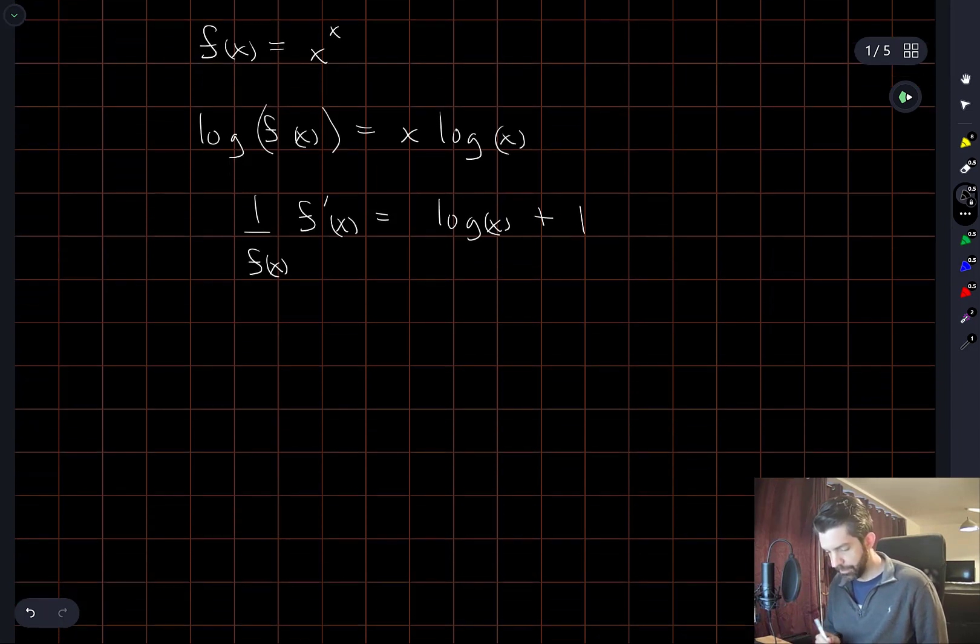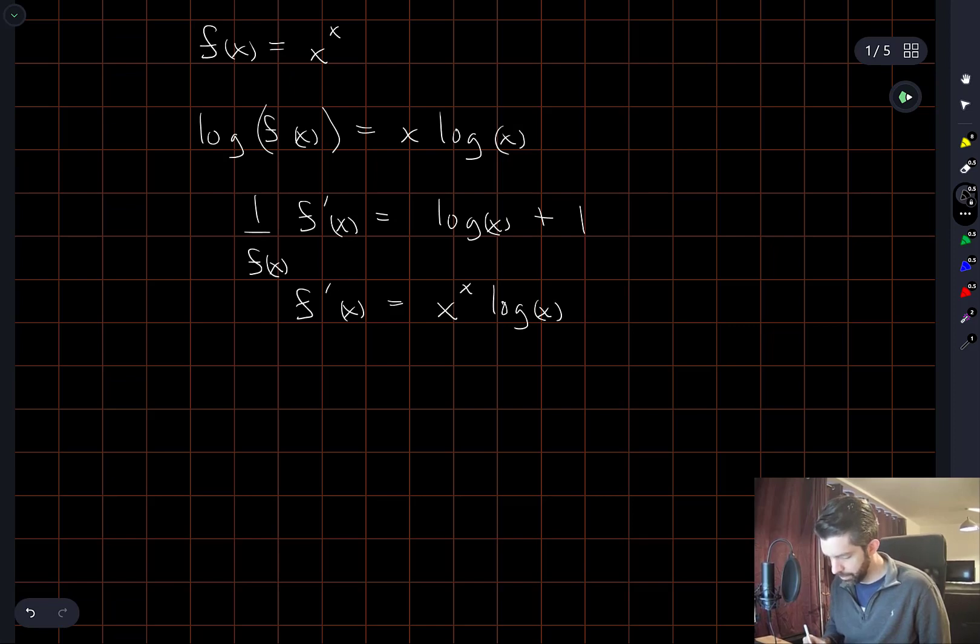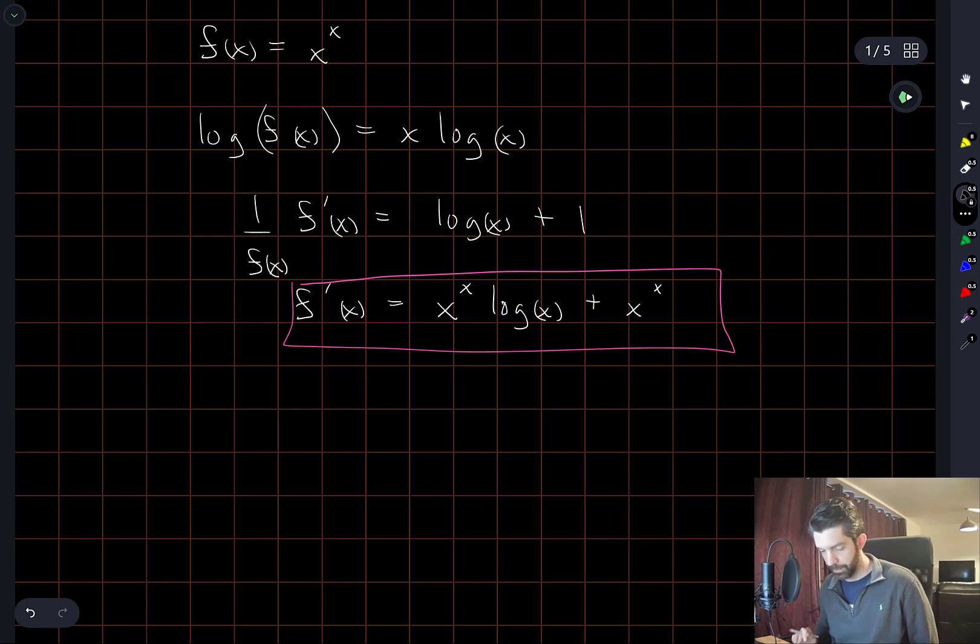So now I'm going to multiply through by f of x, which is x to the power of x. This gives me x to the x log x plus x to the x. There we go. I've done that computation before a long time ago, probably many times since then.